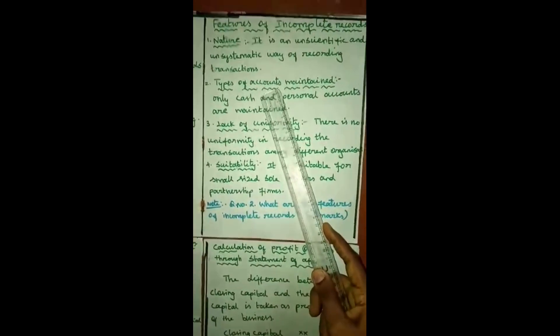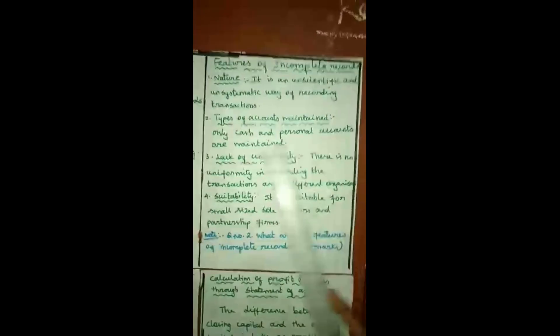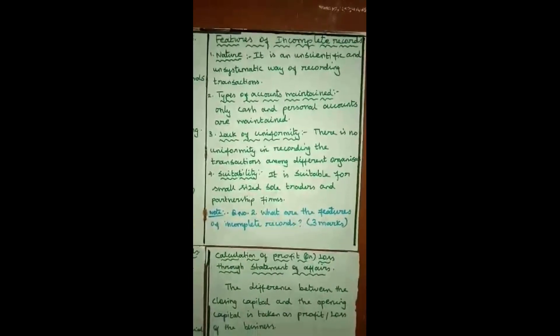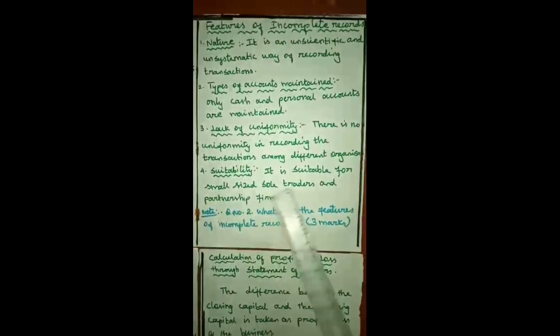The second point is types of accounts maintained. We know very well there are personal, real, and nominal accounts. But here only cash and personal accounts are maintained. Third point: lack of uniformity — there is no uniformity in recording the transactions among different organizations. The last one is suitability: it is suitable for small size sole traders and partnership firms.